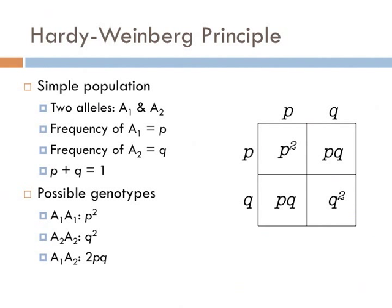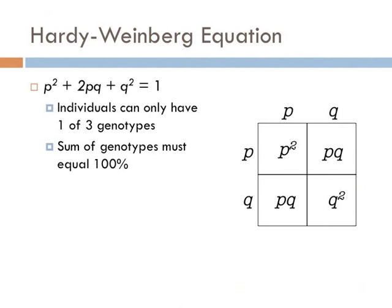The expected probability of genotype A sub 1, A sub 2 would be the percentage of gametes of A sub 1 multiplied by the percentage of gametes of A sub 2. However, we also have to multiply that by 2, because there are two possible ways to combine these two gametes: A sub 1 with A sub 2, or A sub 2 with A sub 1. So each population can have three possible genotypes, and since there can only be three, the sum of their probabilities must equal 1. This gives the equation: P squared plus 2PQ plus Q squared equals 1.